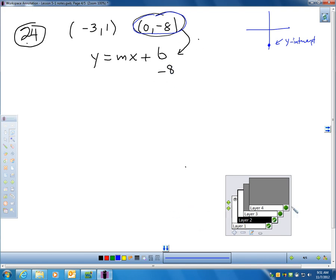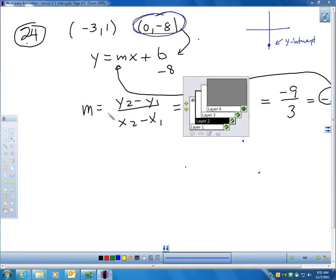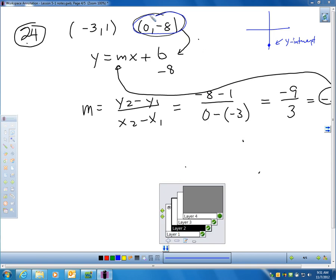The slope formula is y sub 2 minus y sub 1 over x sub 2 minus x sub 1. We don't need a graph. We can quickly calculate the slope. So, what I decided to do, let me erase what I have to make this a little bit clearer. What I decided to do is I decided to call this point 2 and this point 1.